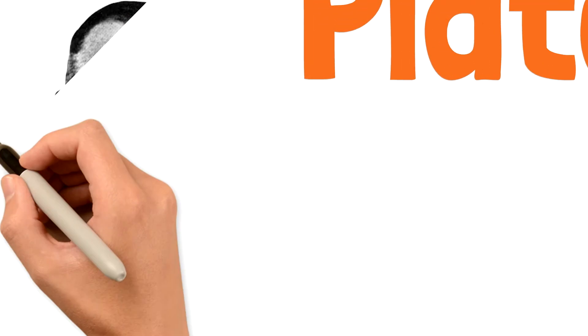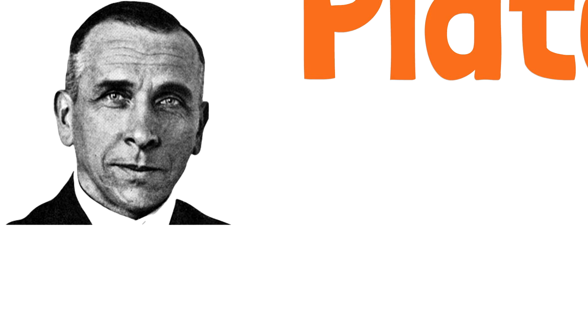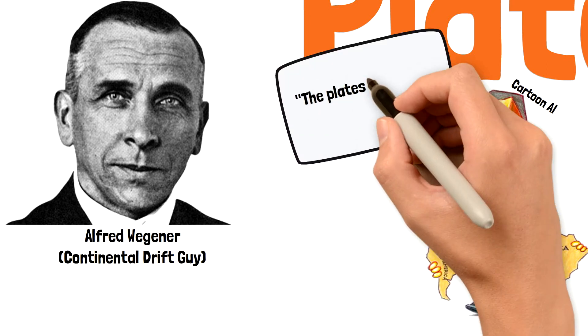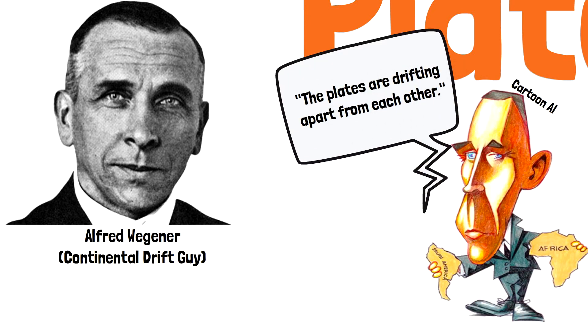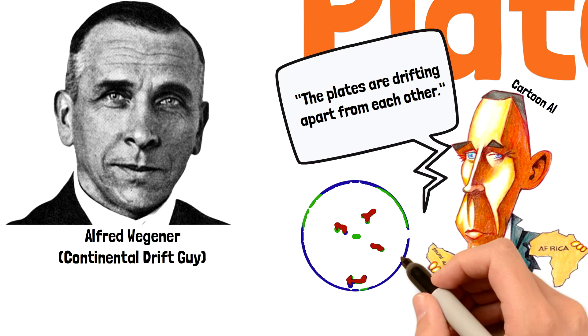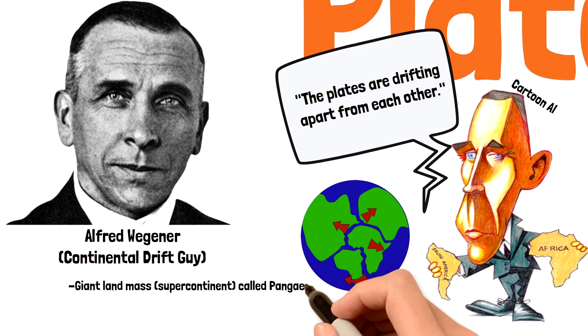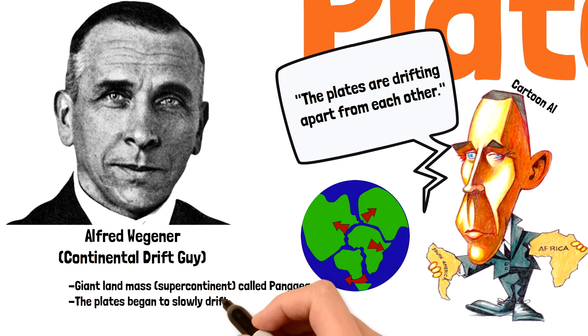A long time ago, a German scientist named Alfred Wegener discussed the idea of continental drift. The idea of continental drift says that the plates are drifting apart from each other. Millions of years ago, the Earth was one giant landmass or supercontinent called Pangaea. Pangaea then broke up and the plates began to slowly drift to where they are today.